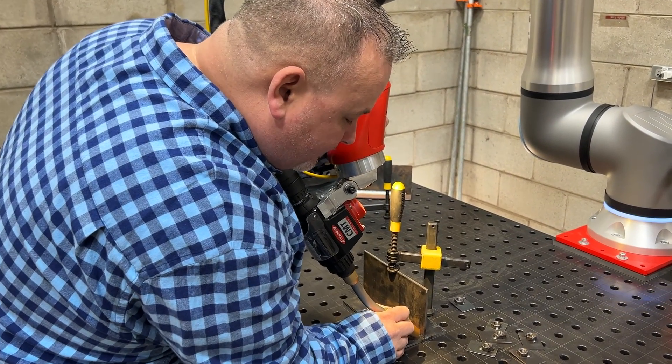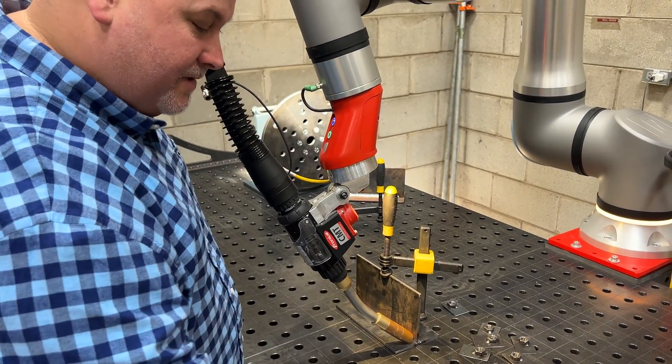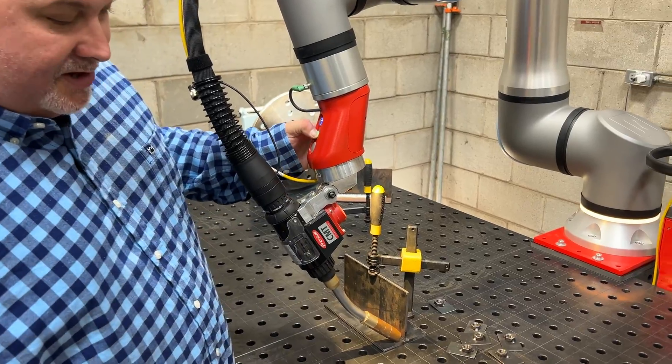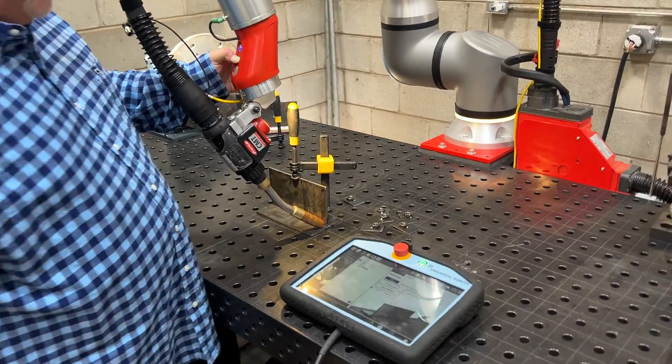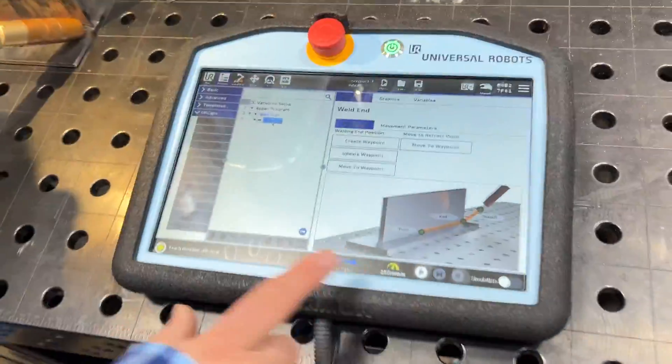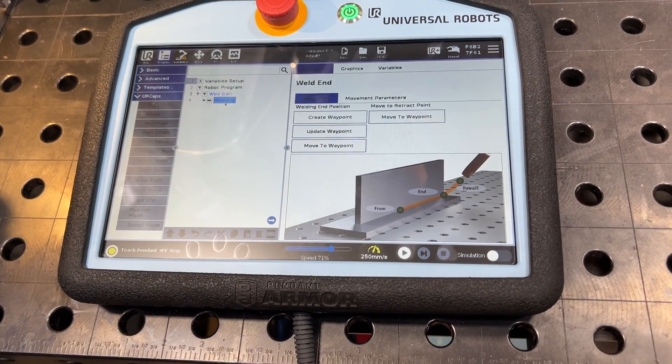I'm going to put it over at the end of the weld, set my torch angle where I want it, and now if I press the green button again it says I'm capturing the end position. It flashed.